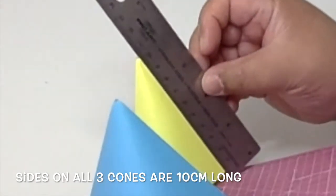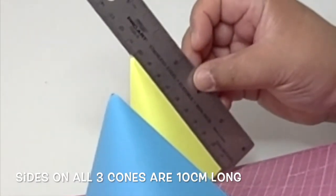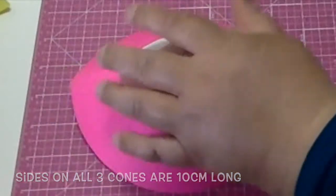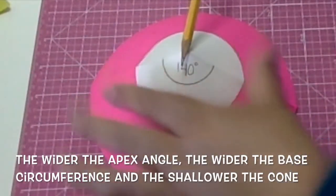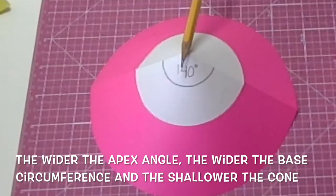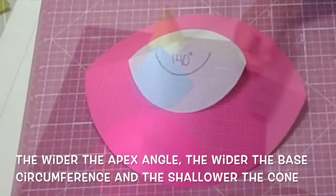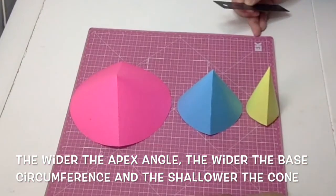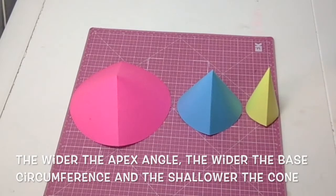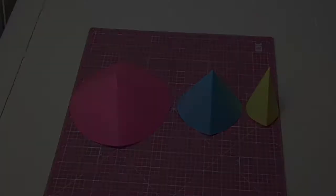The wider the angle, the wider the base, and that makes the cone more squat. If the angle is narrow, however, the tighter the circumference at the base and the cone is slim.